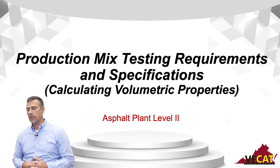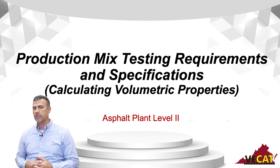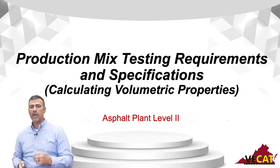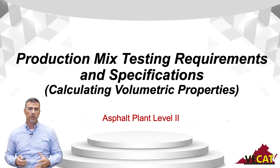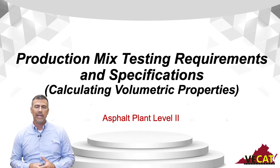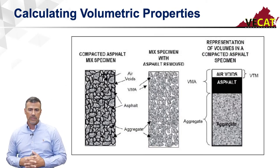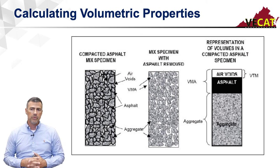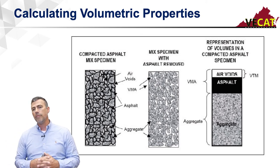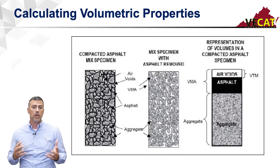I talked with you earlier about compacting samples and running bulk specific gravity and maximum specific gravity. With those values that we determine, we can now calculate some of these volumetric properties that are important to ensure that our mix performs as we intend it. So let's first talk about volumetrics and what that means. Here's a diagram that illustrates the concept of volumetric components, or the components of the mix in a volumetric state.